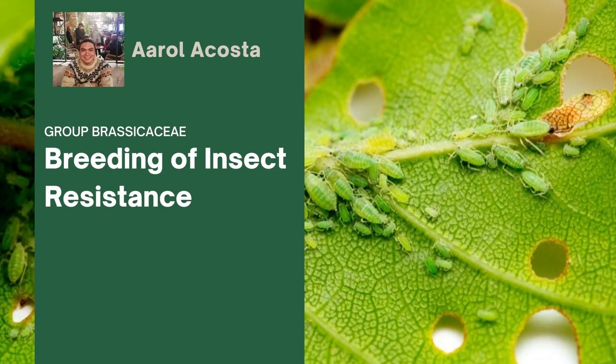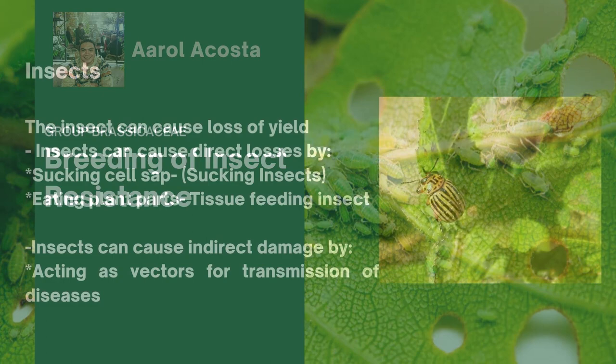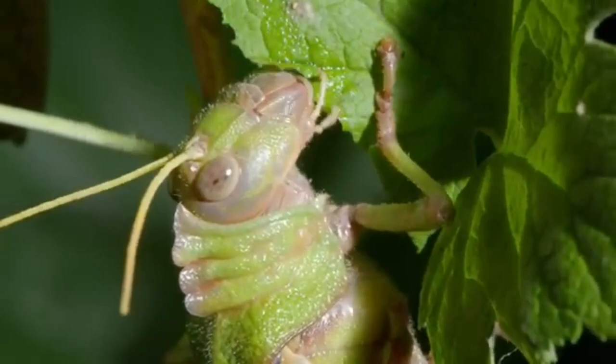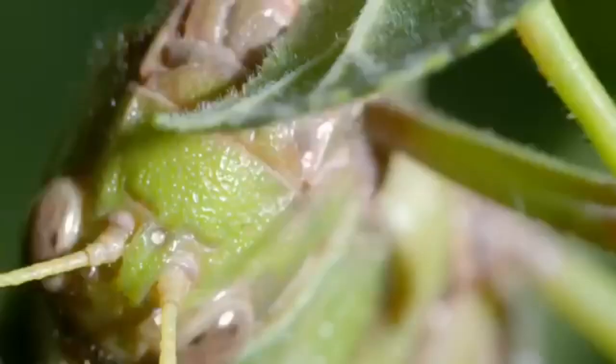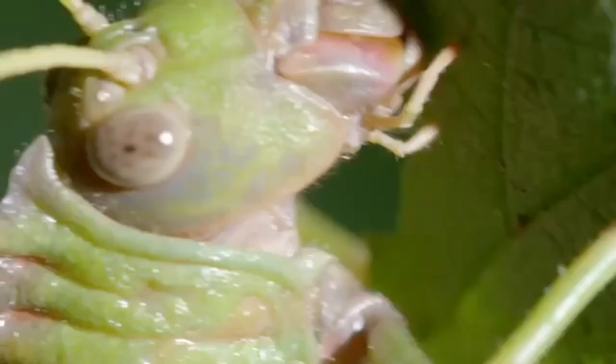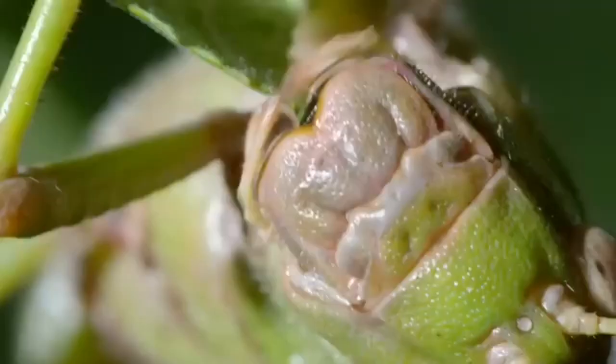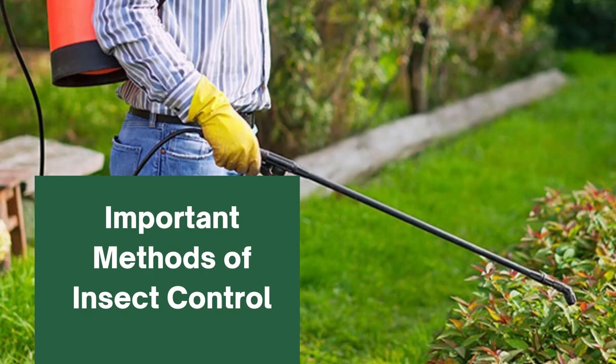Good day everyone. The topic assigned to our group is the breeding of insect resistance. Insects can cause loss — either direct losses or indirect losses. Direct losses are the insects that eat plant parts like leaves or stems. Indirect losses are when insects act as vectors of diseases, leading to reduction in plant growth, damage to vegetation, premature defoliation, and wilting of plants.